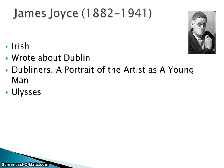James Joyce is one of the most famous modern Irish writers. He was born in Dublin, and he also wrote about Dublin. He depicted in his work Dublin's sordid atmosphere, and many of his famous works are Dubliners, A Portrait of the Artist as a Young Man, and of course his masterpiece Ulysses.